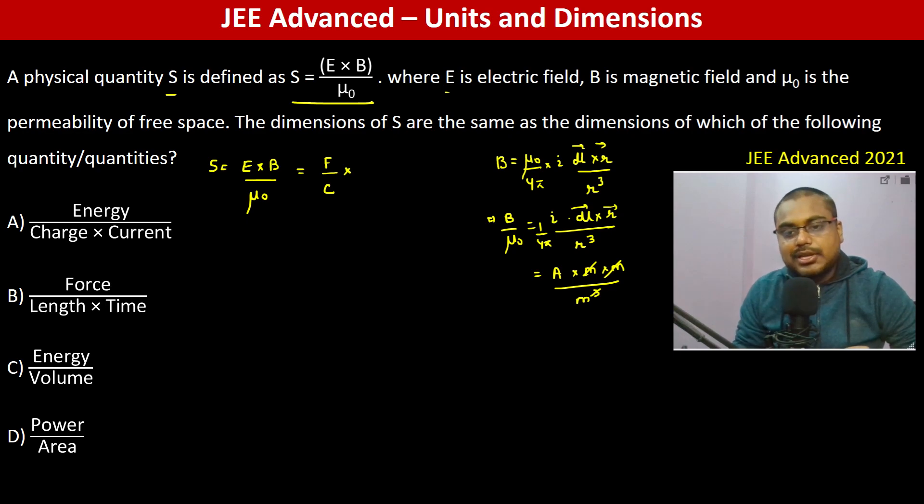Ampere is coulomb per second, so coulomb per second meter. This is B by mu₀, so coulomb cancels and this is F divided by ms. F becomes kg·m·s⁻², newton, ms, m is gone, so this is kg·s⁻³. This is S.